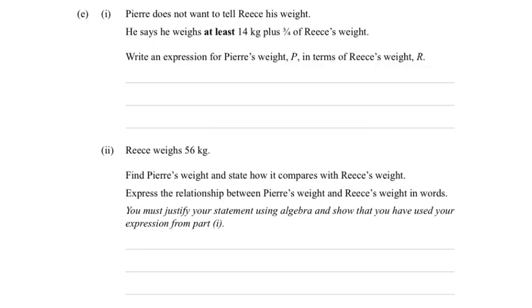The question was relating to this one here. Basically what we had is Pierre does not want to tell Rhys' weight. He says he weighs at least 14 kgs plus 3 quarters of Rhys' weight. Write an expression for Pierre's weight P in terms of Rhys' weight R.